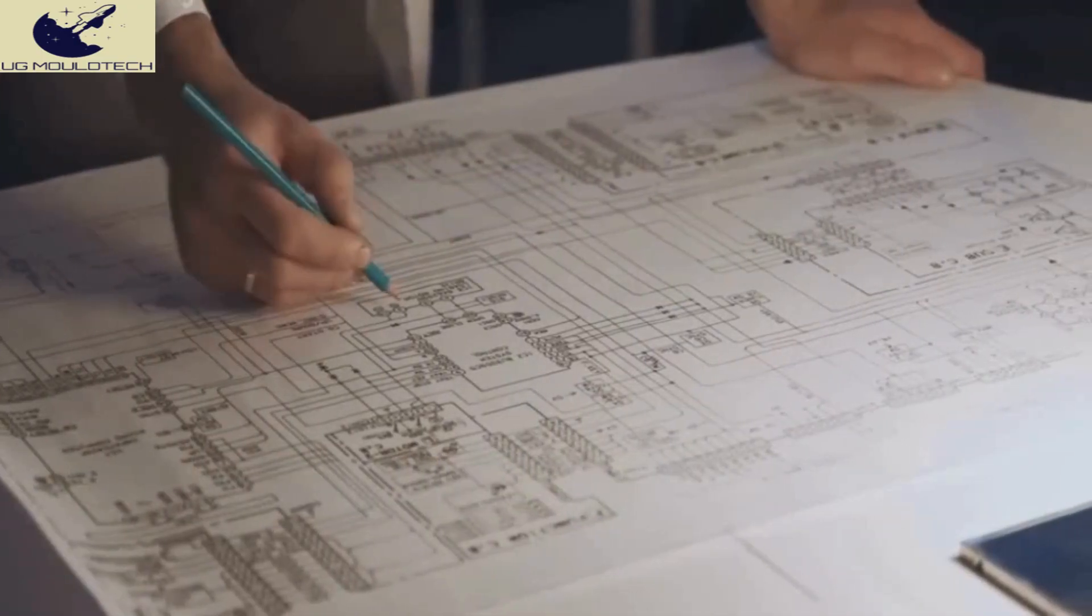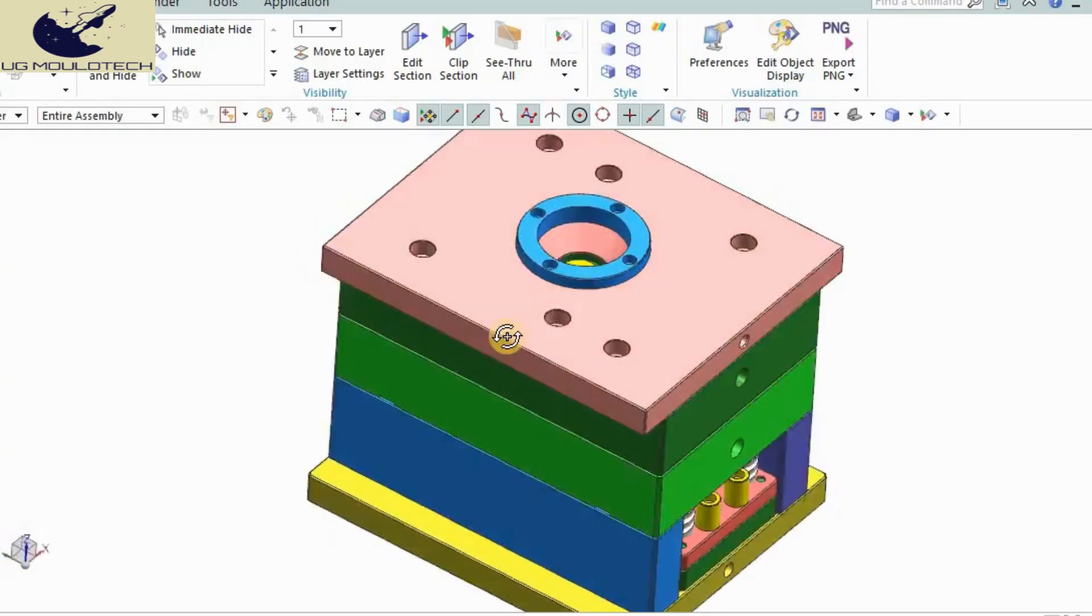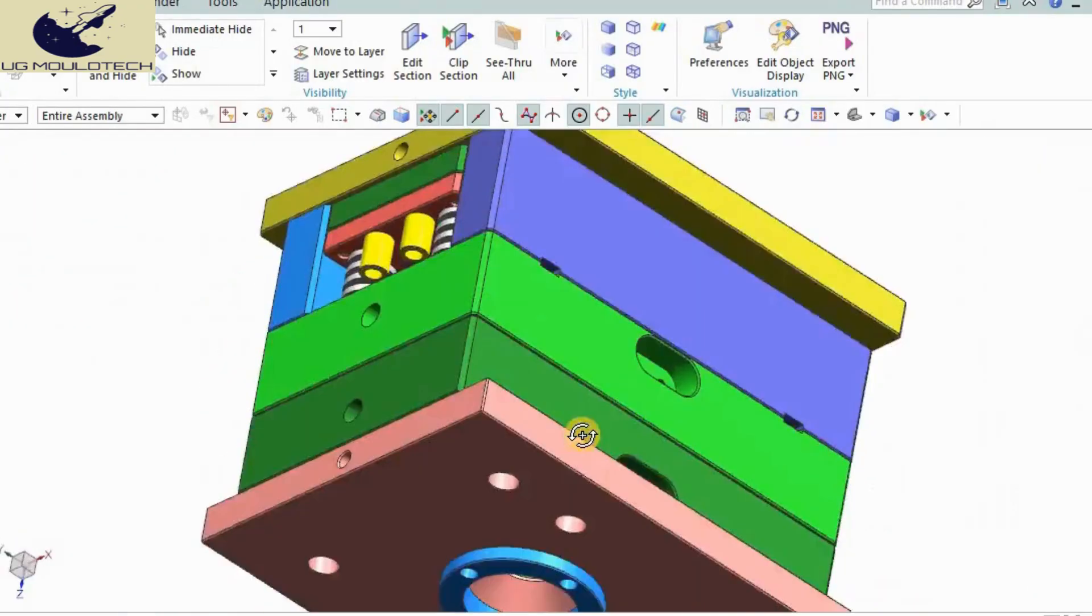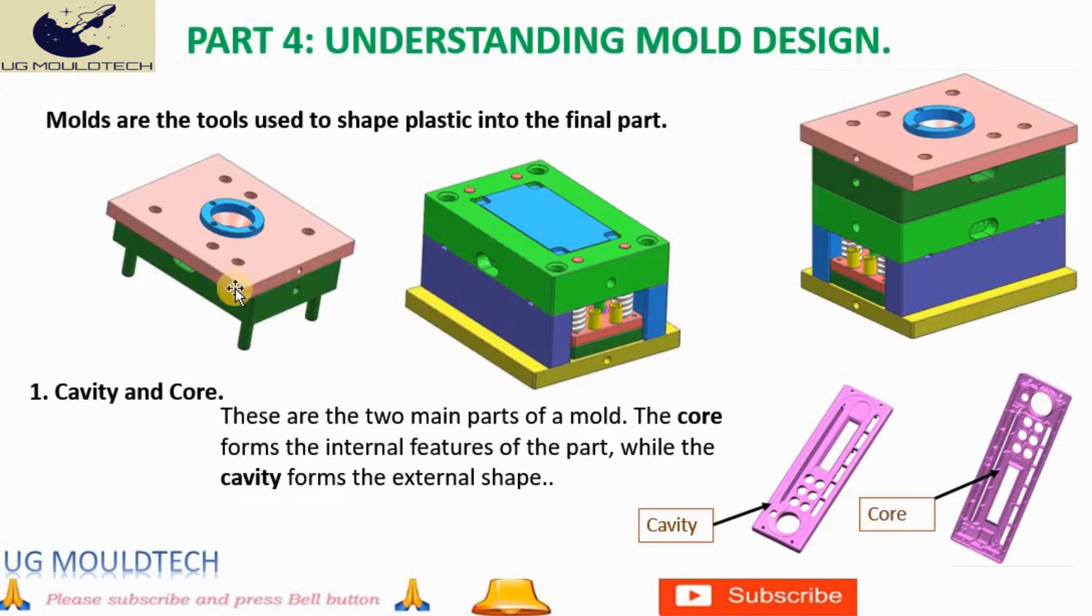Let's dive into the fascinating world of mold design. Molds are essential tools that shape plastic into precise final parts. A well-designed mold can significantly enhance production efficiency and ensure superior part quality. The mold consists of two primary components: the cavity and the core. The core is responsible for forming the internal features of the part, while the cavity shapes the external surface. These two components must fit together perfectly to create the final mold.